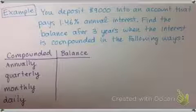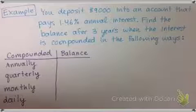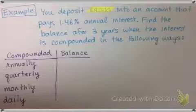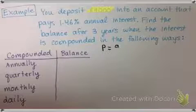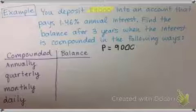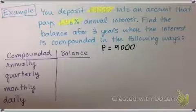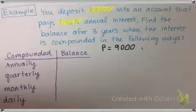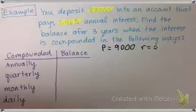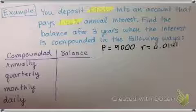So I see that this $9,000, this will be my principal. I see that I have an interest rate of 1.46%, so that means r is 0.0146.